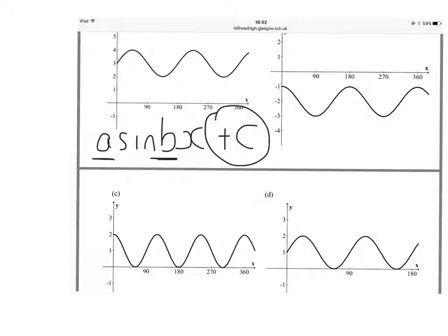So the amplitude: the curve goes up to 4 and down to 2, so that's a total height of 2. Half that, and I get 1. So A is equal to 1; the amplitude is 1.